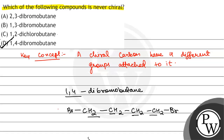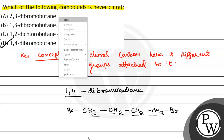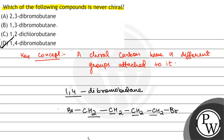यह 1,2-dichlorobutane, 1,3-dibromobutane और 2,3-dibromobutane — यह chiral कभी हो सकते हैं, लेकिन option D कभी नहीं हो सकता। So this will be the final answer. Hope you all understood it well, best of luck.